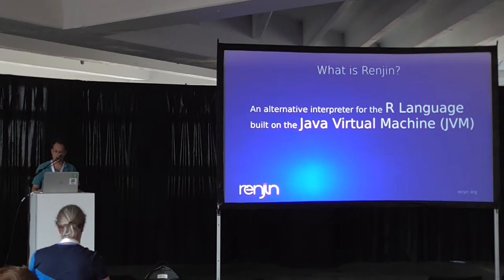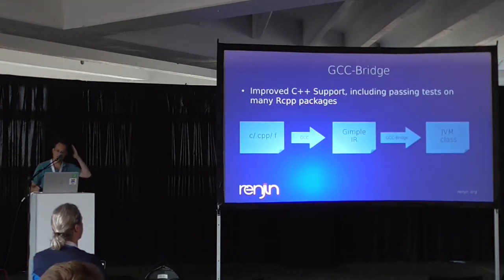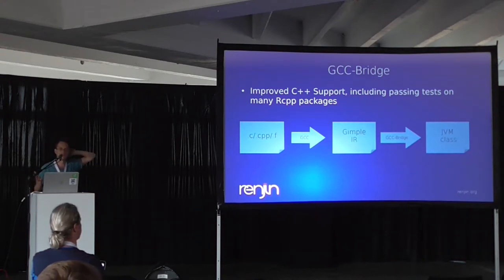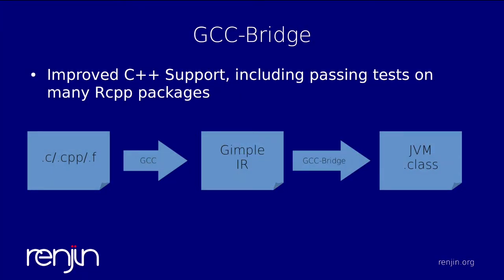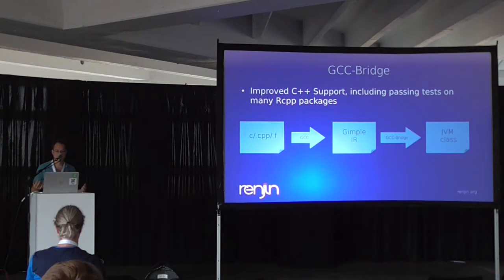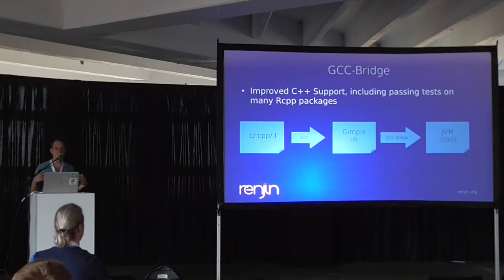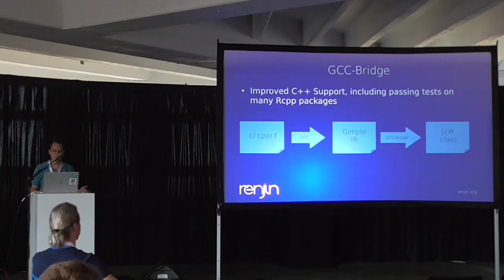One of the things we've been working on is a sub-project called GCC Bridge, which helps us run packages with native code on the JVM. It takes C, Fortran, and C++ code, runs it through GCC, performs some transformations, and spits out JVM bytecode we can run in Renjin. It also allows us to run multiple instances in the same process and emulate the R C API. We now have much improved support for C++ including the latest version of Rcpp, so many packages requiring Rcpp are now available for Renjin.